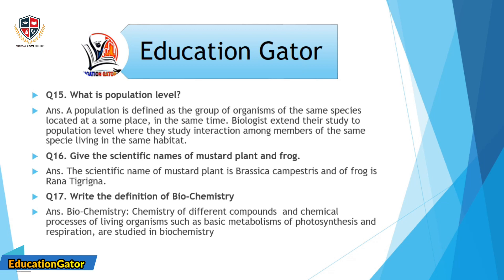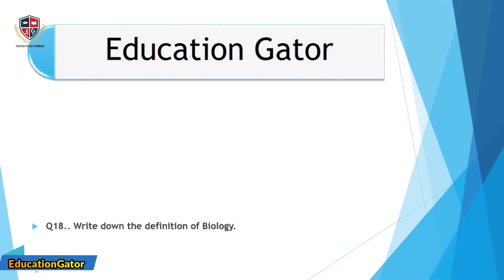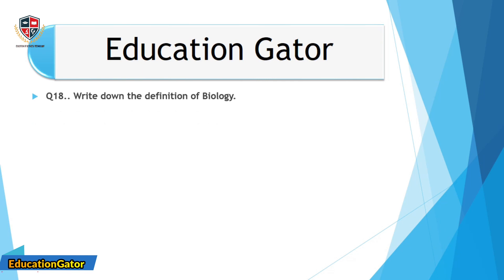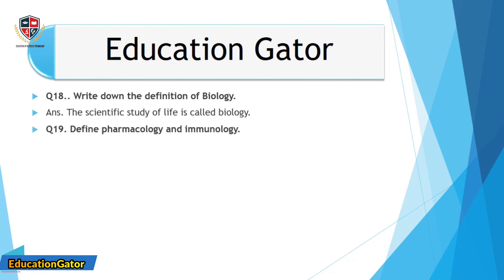Question number 17: Write the definition of biochemistry. Ans. Biochemistry is the study of different compounds and chemical processes of living organisms, such as basic metabolic processes like photosynthesis and respiration, which are studied in biochemistry.